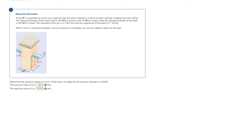We have a factor of safety formula: the factor of safety is equal to the ultimate strength over the stress. We have the ultimate strength and the factor of safety, so we just need to find the stress going through the wood. The formula for stress is P over A, and since we are given P, we need to find the cross-sectional area A.